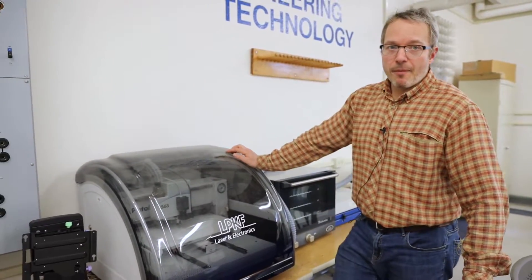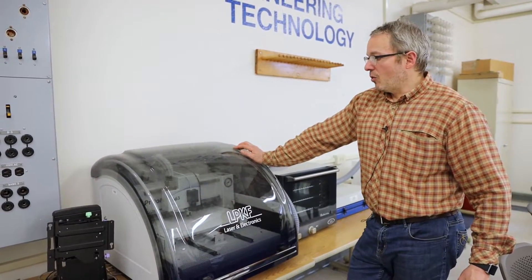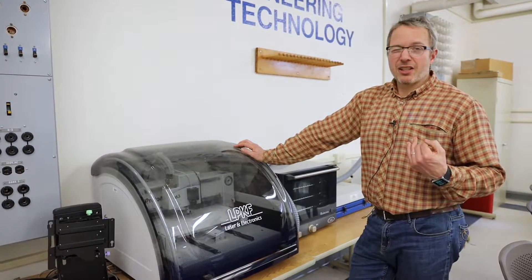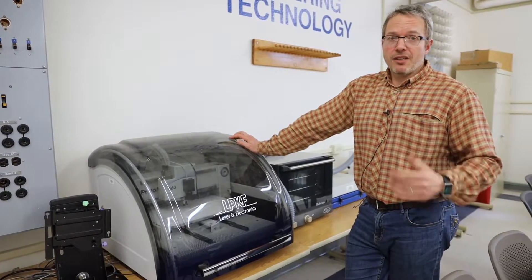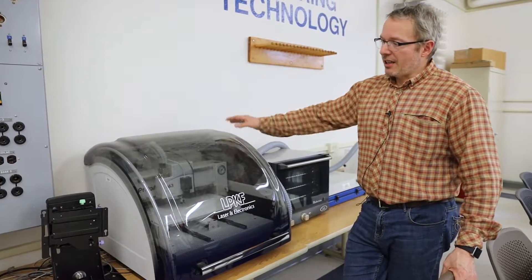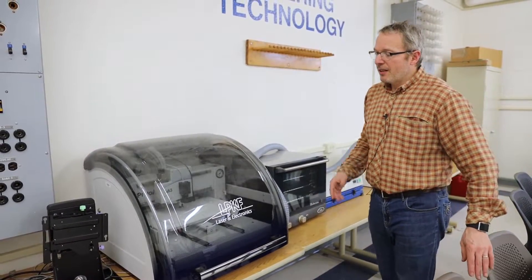And then you use this milling machine to remove any of the copper pieces that don't want to be there because you don't want to have connections between devices that don't belong because the circuit won't work as intended. So again another really nice distinctive that we have this equipment and then we offer this material.